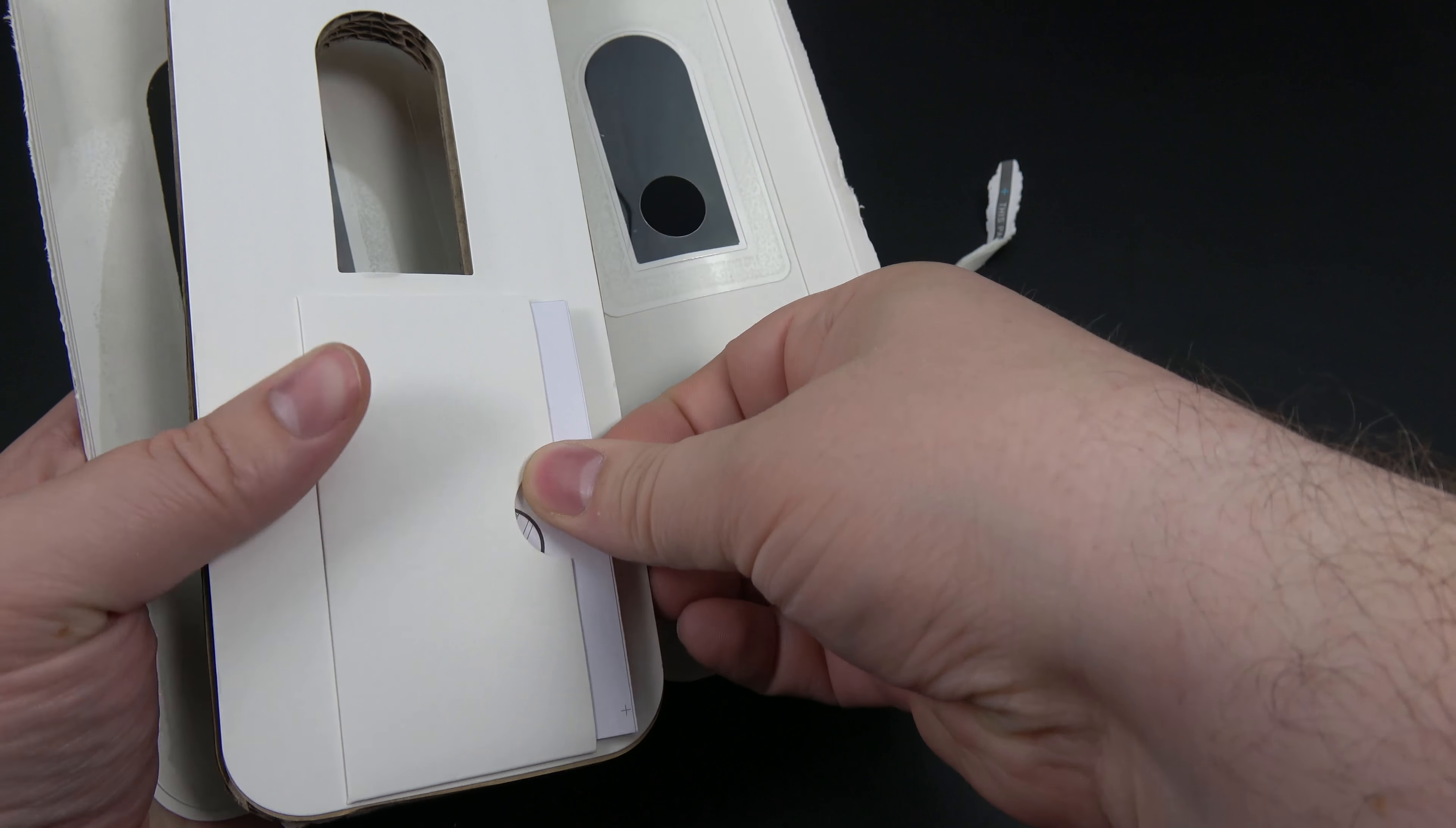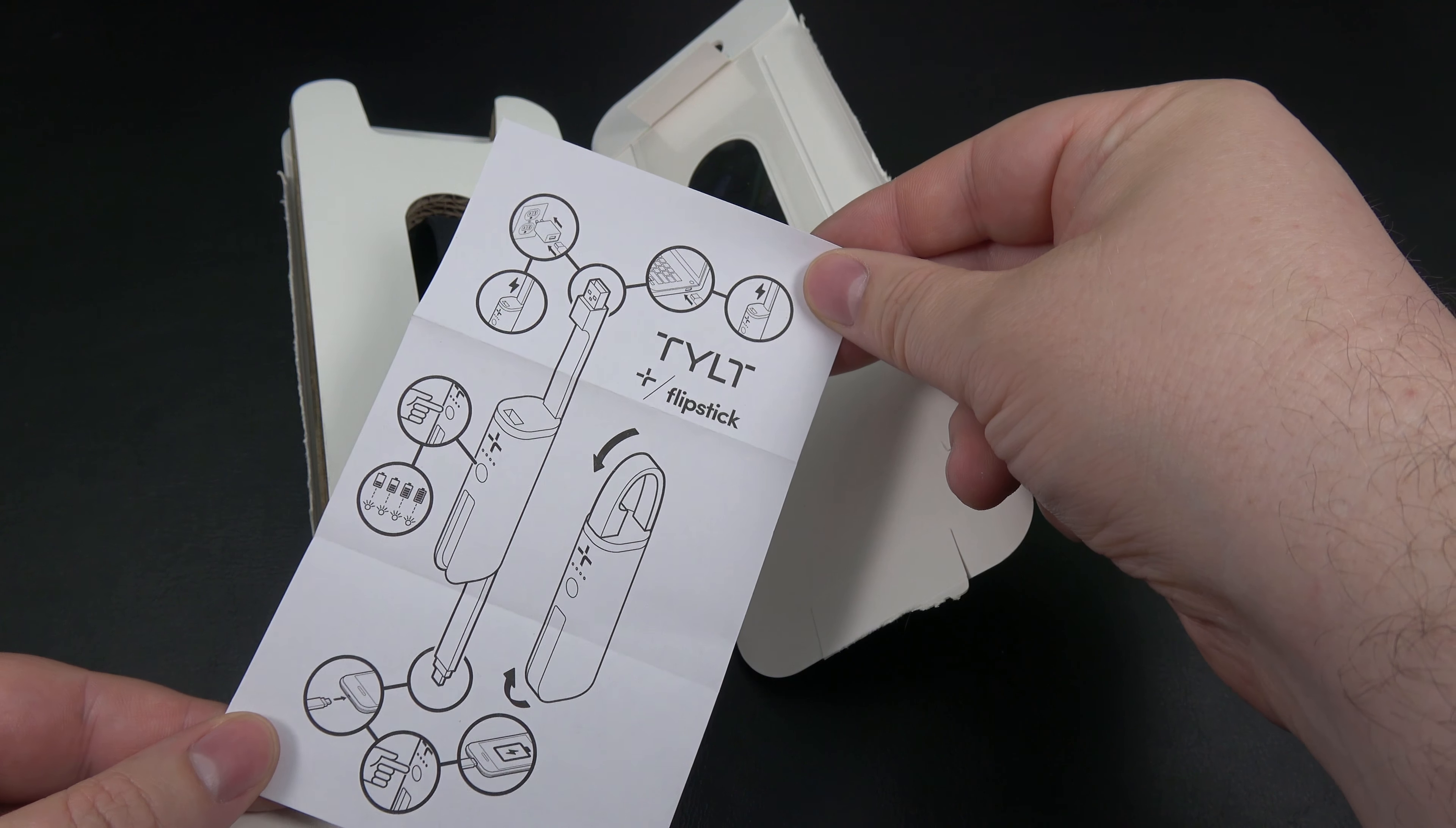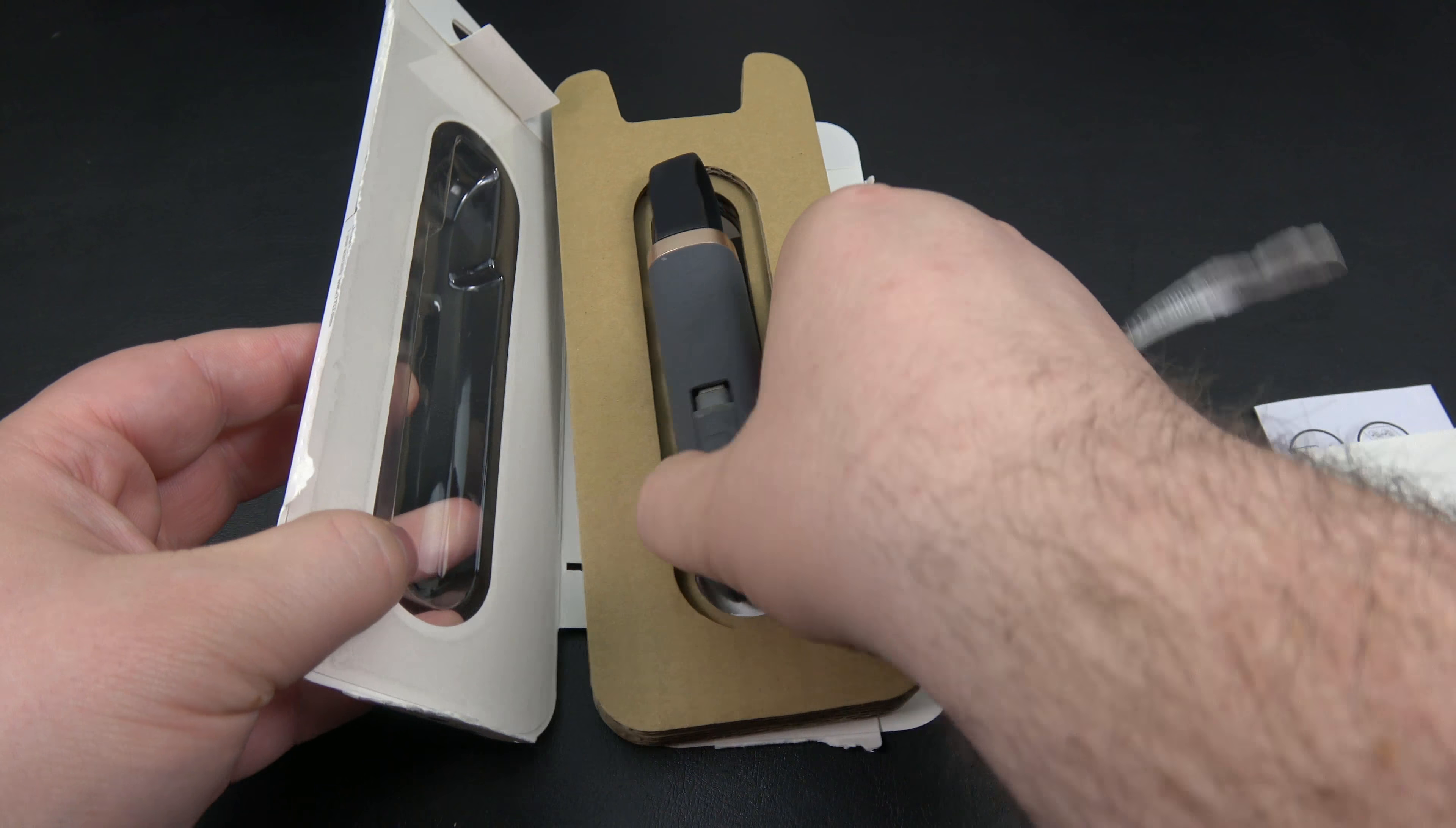We have some instructions here, warranty - so one year warranty - and basic Flipstick instructions. You flip it open, use the USB end to plug it in and charge it, and then you've got your lightning connector at the bottom here. Pretty simple stuff.